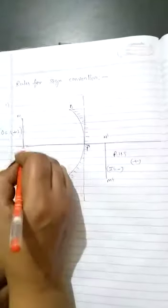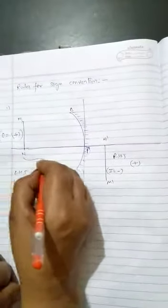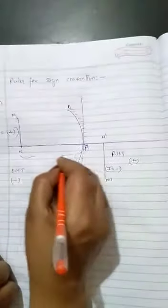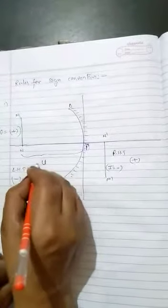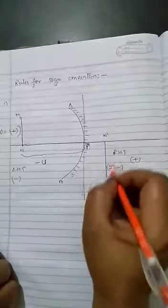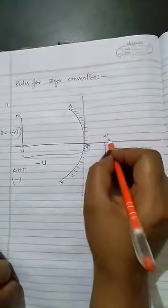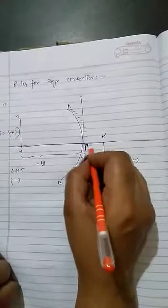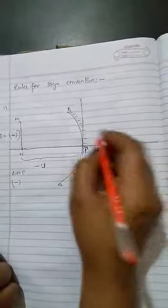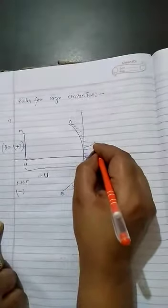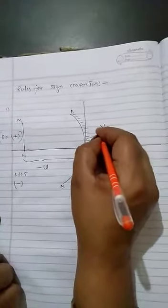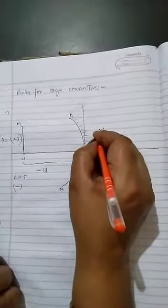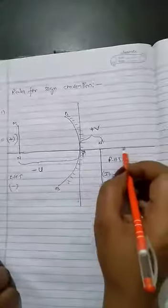Suppose M is the object; the distance of the object is denoted by U, so we write −U. If M'N' is the image formed behind the mirror, the distance of the image is denoted by V, and according to sign convention we write a positive sign for V.